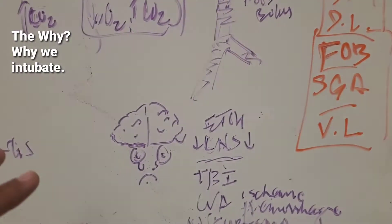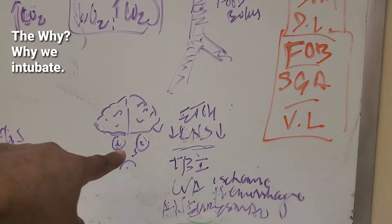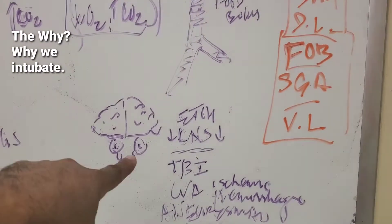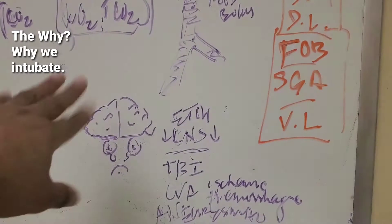And then what am I protecting the airway from? A bad brain. So this should be connections of the eyeballs to the brain stem, but I try to make it sad.